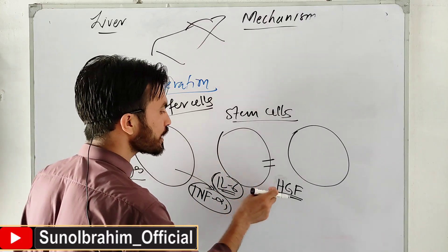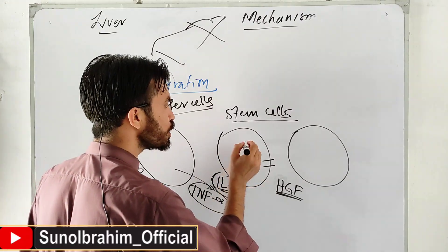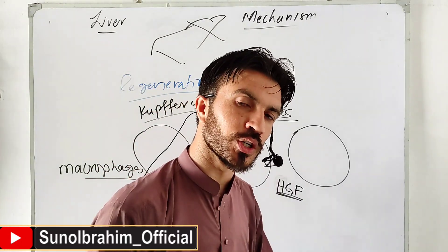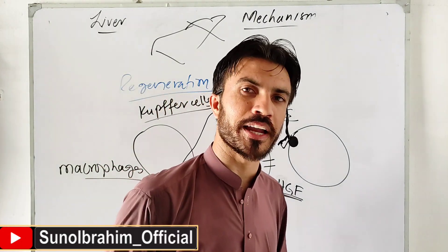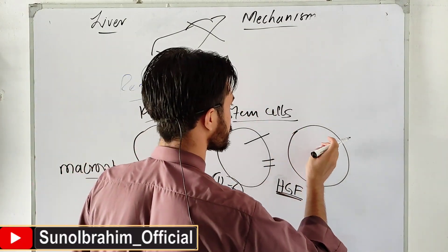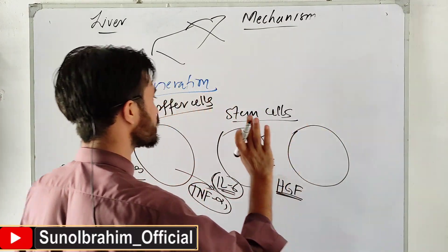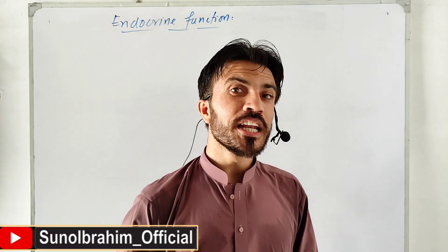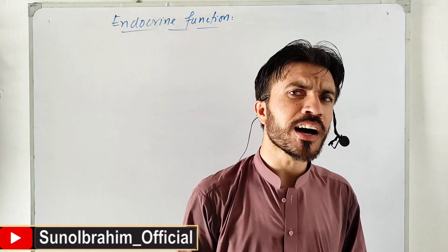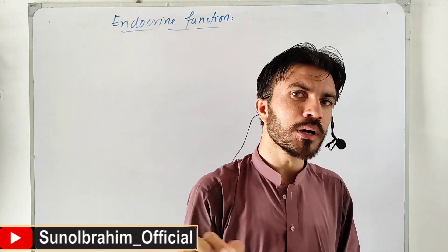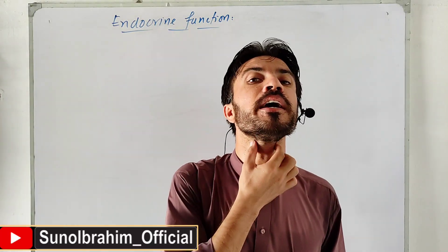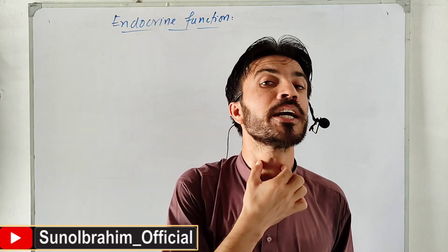Growth factors bind to receptors and mature hepatocytes begin proliferation. The liver has its own mechanism - if damaged or cut, hepatocytes regenerate using this built-in process. The liver also has endocrine functions - it produces hormones and proteins that activate various glands.